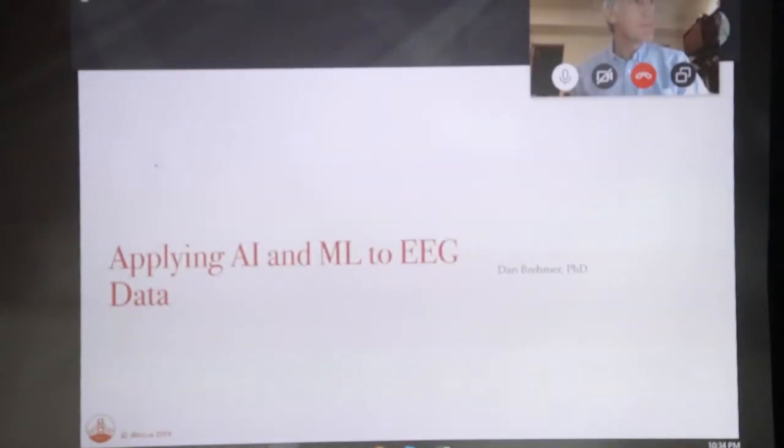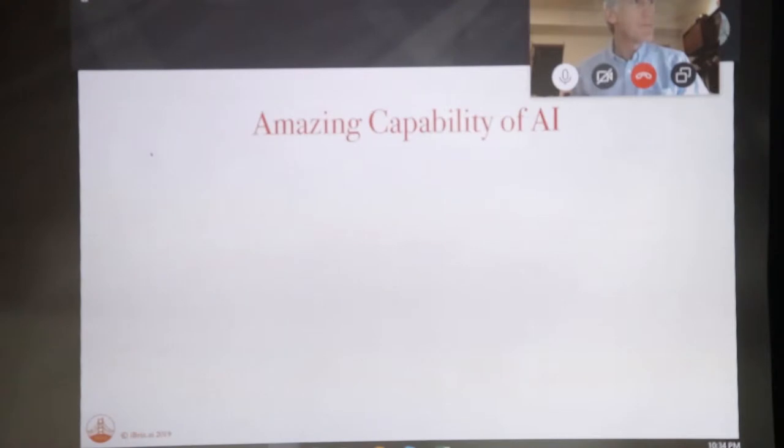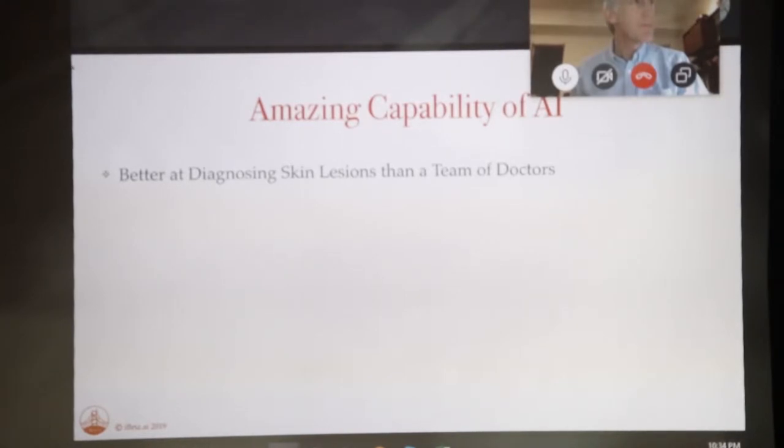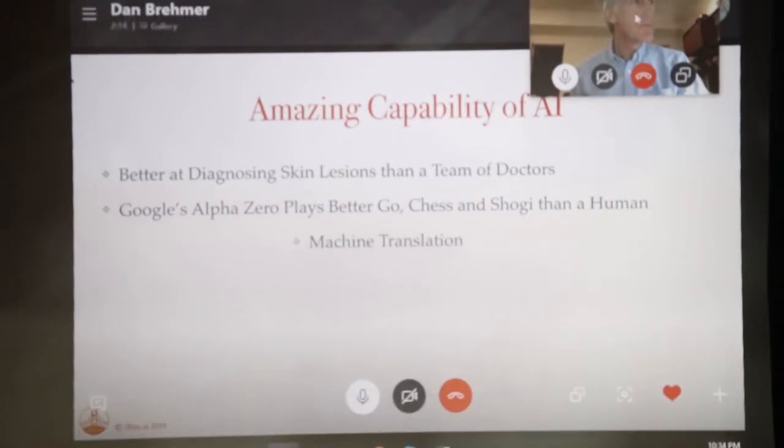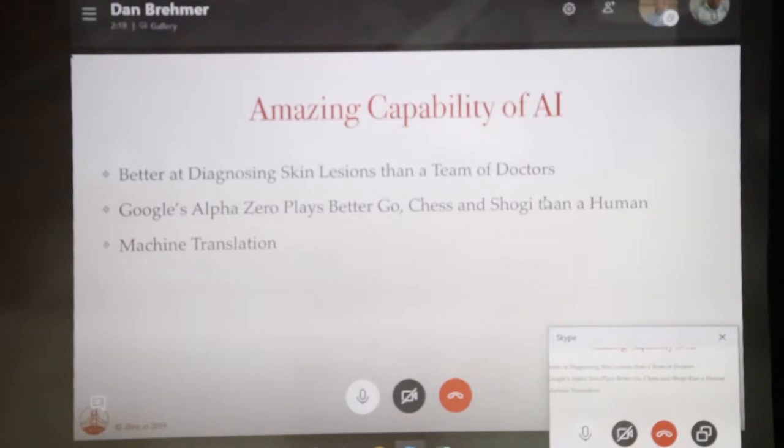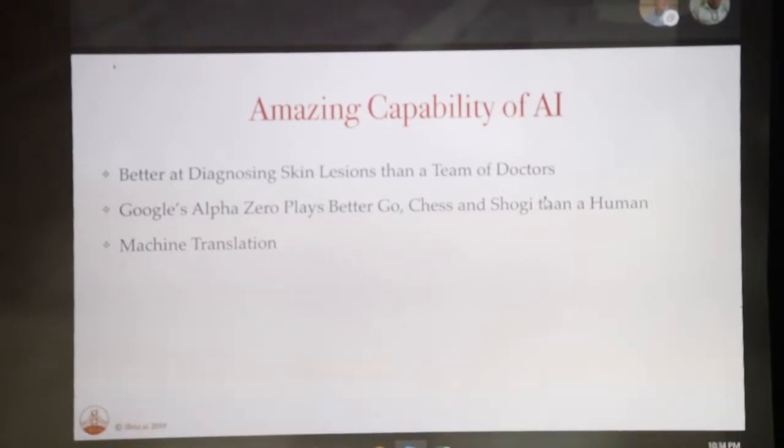I'm going to talk about applying AI and machine learning to EEG data. First of all, you're probably all pretty aware of just how amazing artificial intelligence has been doing recently with all sorts of problems. For example, diagnosing medical conditions like skin conditions better than a team of doctors, Google's AlphaZero playing Go, chess and Shogi better than a human, and machine translation, which has just become so reliable. If not perfect yet, it's pretty amazing.